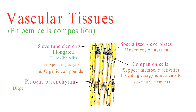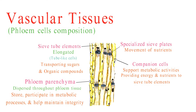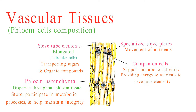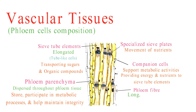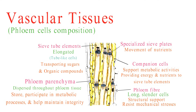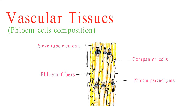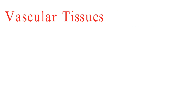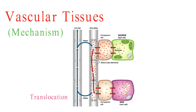Phloem parenchyma cells are dispersed throughout the phloem tissue and serve various functions. These cells store starch and other substances, participate in metabolic processes, and help maintain phloem integrity. Phloem fibers are long, slender cells that provide structural support to the phloem tissue. Their strong walls enhance the overall stability of the phloem and help resist mechanical stresses. These various components of phloem work in harmony to transport sugars and other organic compounds efficiently throughout the plant. Phloem functions through a process called translocation, where sugars are actively transported from source to sink tissues, thanks to the pressure flow mechanism, with companion cells supporting the metabolic functions of sieve tube elements.